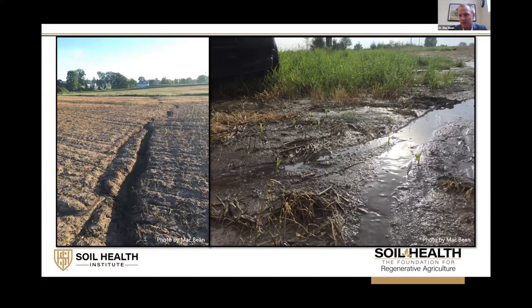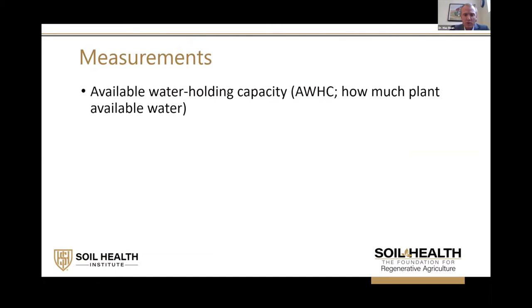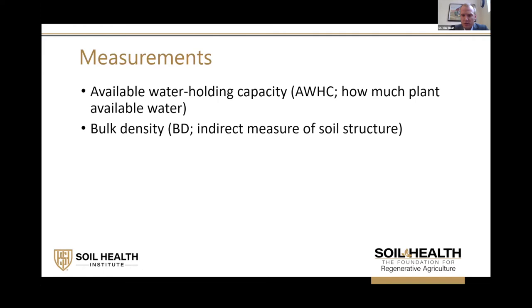There are several different ways to measure the interaction between soil and water. One measurement is available water holding capacity — how much water the soil holds that's also available for plant uptake, which is often related to drought resiliency. Another is bulk density, which is an indirect measure of soil structure. Generally, lower bulk density likely means better soil structure.